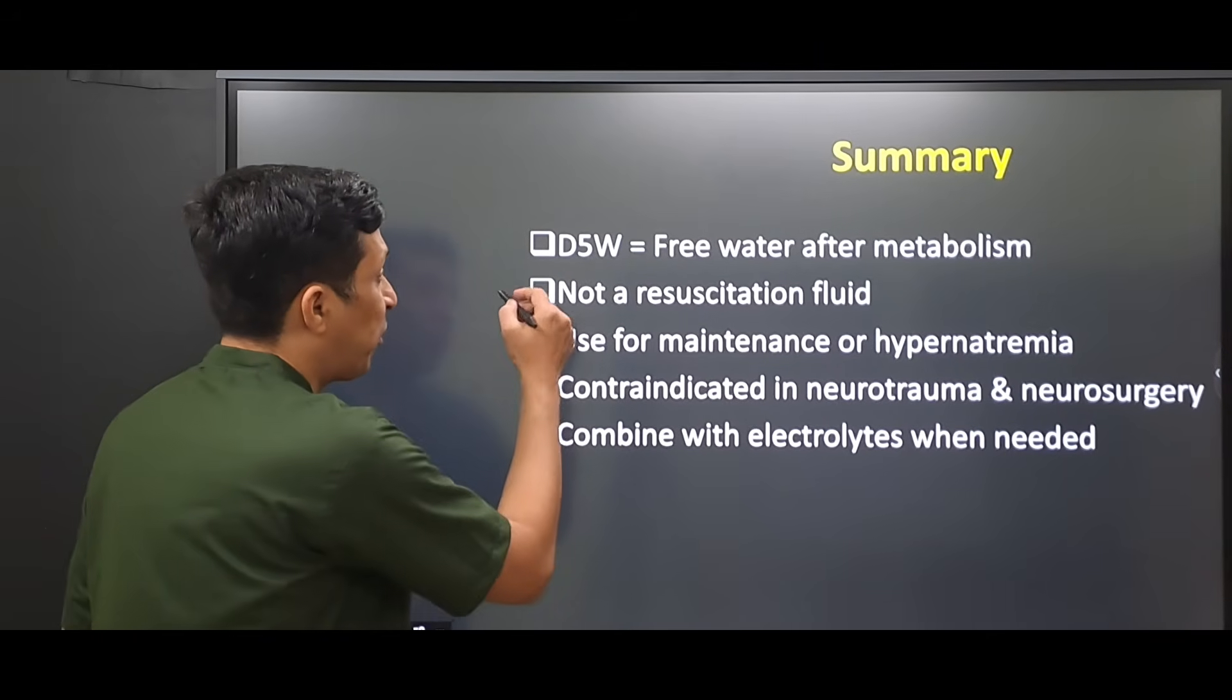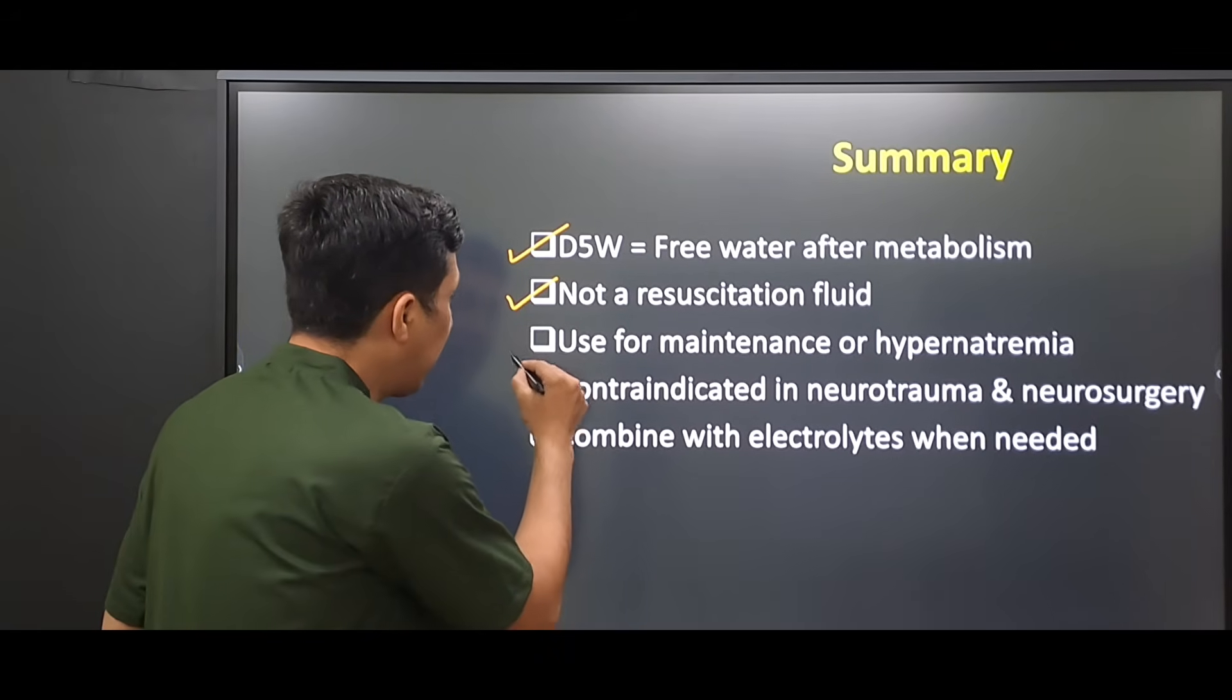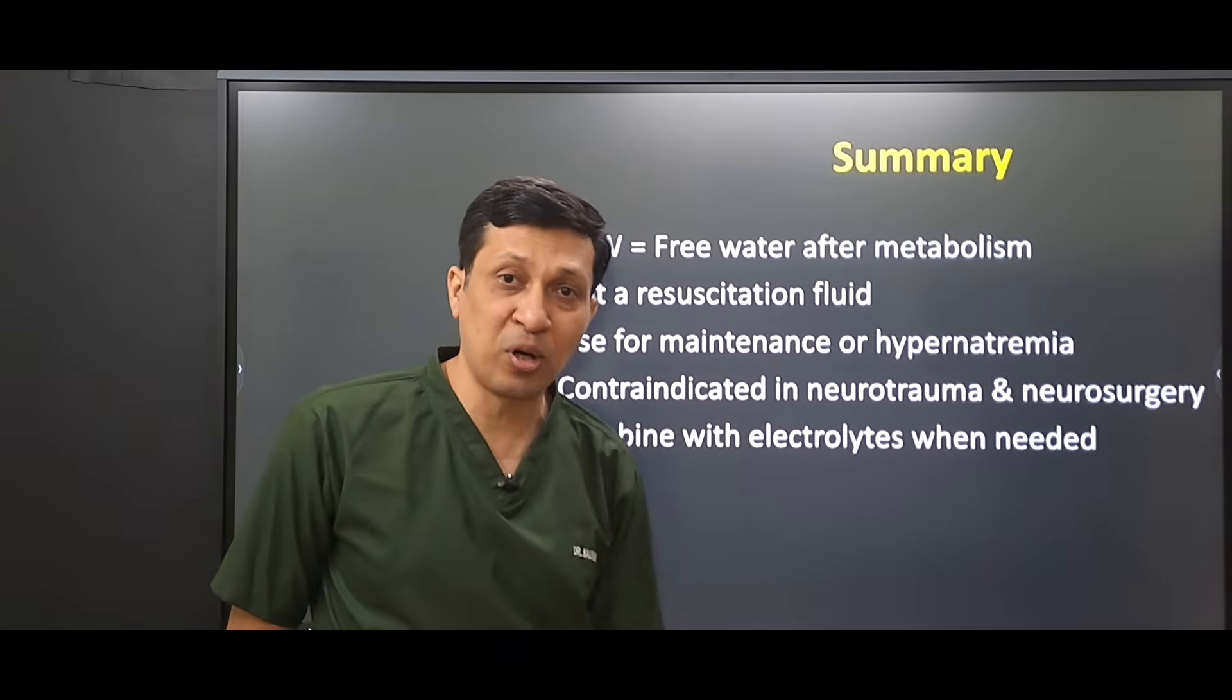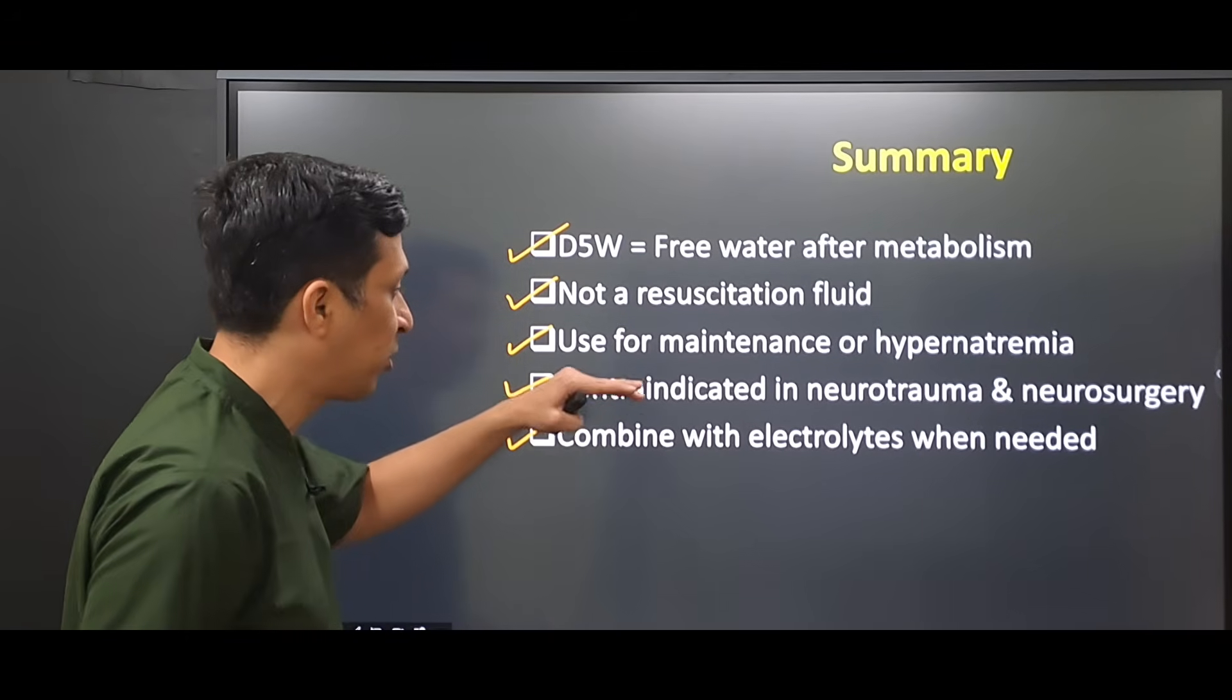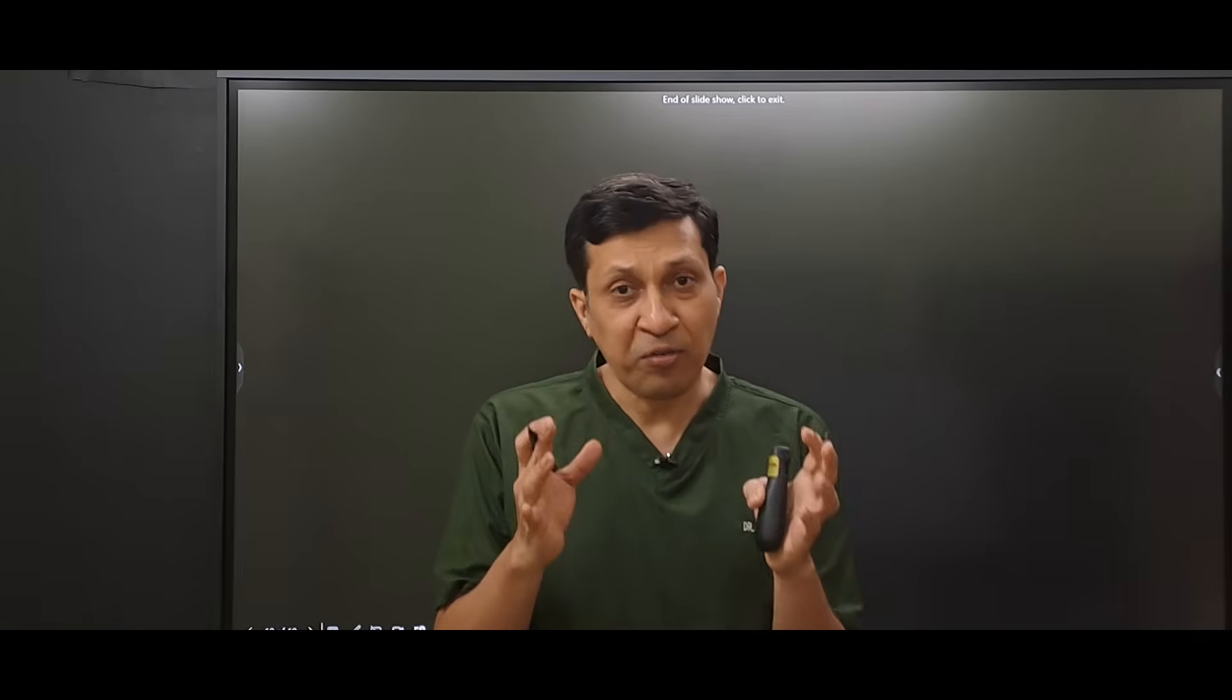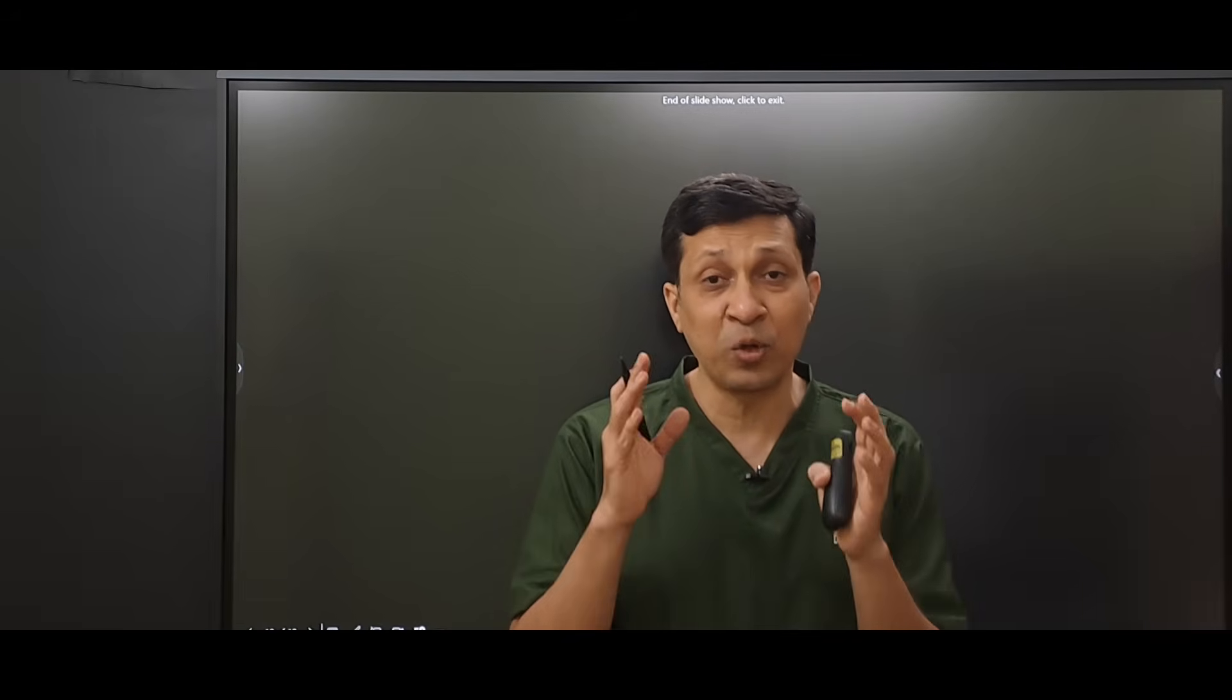So in summary, dextrose 5% remains free water after metabolism. It is not a resuscitation fluid. It is used mainly as a maintenance fluid and for hypernatremia. It is contraindicated in neurotrauma and neurosurgery because it leads to cerebral edema. And if you have to give this fluid for a longer time, then you have to combine it with electrolytes. Whenever you pick dextrose 5% for your patient, think for some time: are you giving water or are you giving volume? Dextrose 5% is a terrible resuscitation fluid but a good maintenance fluid.